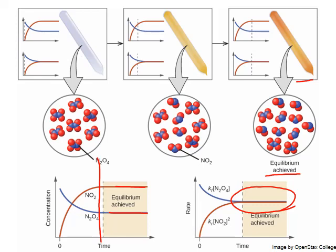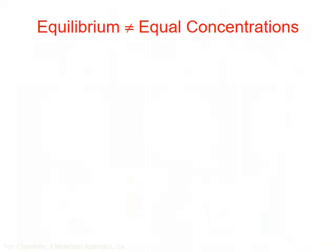In this particular reaction, notice that the concentration of the product NO2 is actually higher at equilibrium than the remaining reactant N2O4. When this happens, we say the reaction favors the products or the forward reaction. Each reversible process is unique — other reactions favor the reverse process, where the concentration of reactant is larger than the concentration of product. It's important to remember that equilibrium does not mean equal concentrations; it only means equal rates.